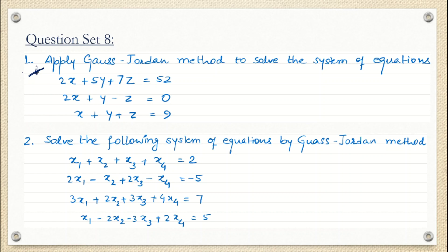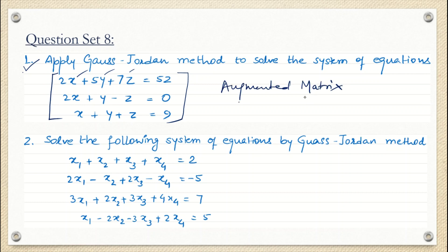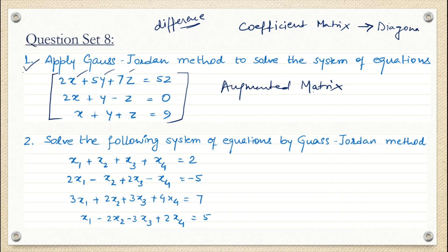So this is the very first question: apply Gauss-Jordan method to solve the system of equations. There are three equations and three variables x, y, z. My very first step is to write down the augmented matrix, exactly as we did in Gauss elimination method. The difference here is that the coefficient matrix will be reduced into a diagonal matrix.